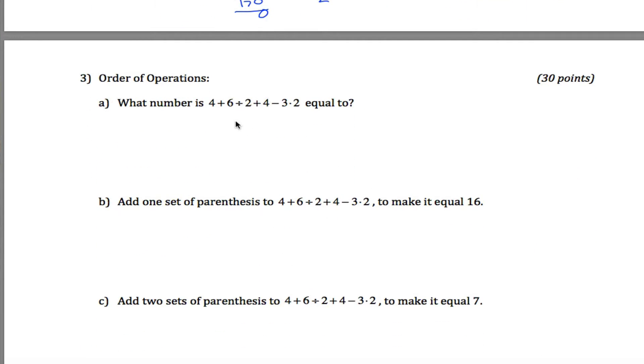Next problem has to do with order of operations. What is 4 plus 6 divided by 2 plus 4 minus 3 times 2 equal to? Well, the trick here is you have to be careful with your order of operations. First you're looking for parentheses. There are none. Then you're looking for exponents. There are none. Then you look for multiplication and division. You want to do all multiplication and division in the order from left to right. So this is 4 plus, and then 6 divided by 2 is 3, plus 4 minus 6, 6 being 3 times 2. Now all I have left is addition and subtraction. So 4 plus 3 is 7, and 7 plus 4 is 11, and 11 minus 6 is 5. So this thing up top is equal to 5.